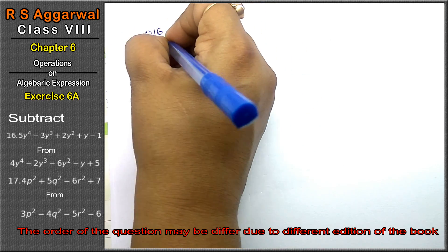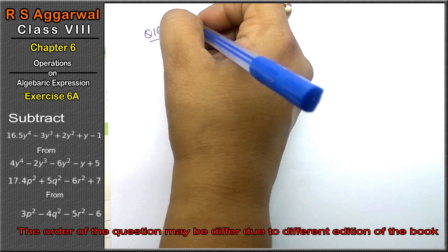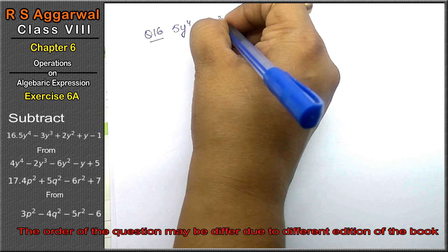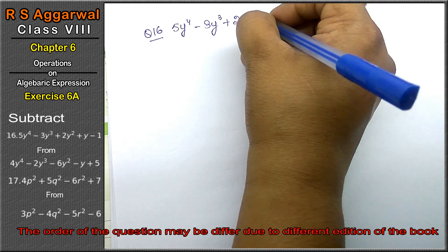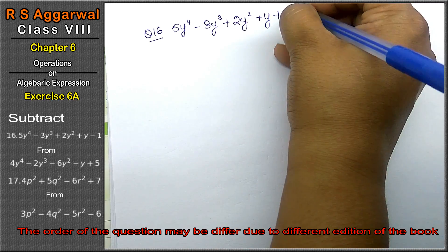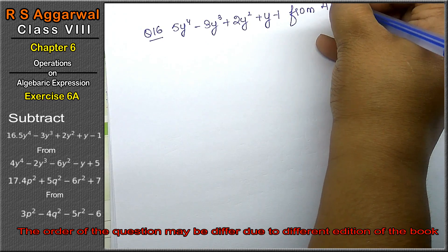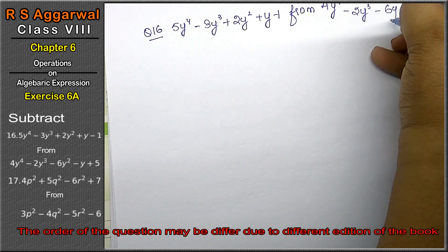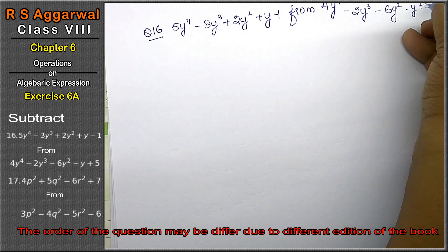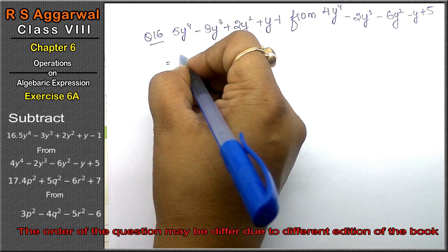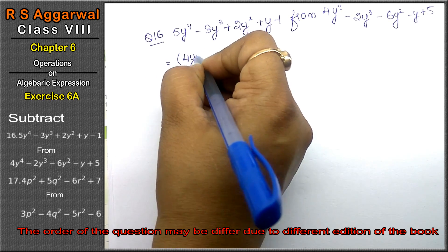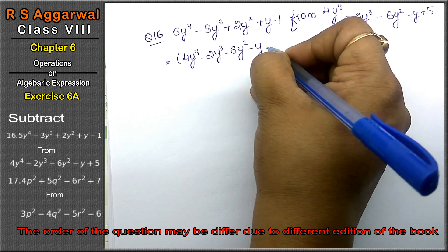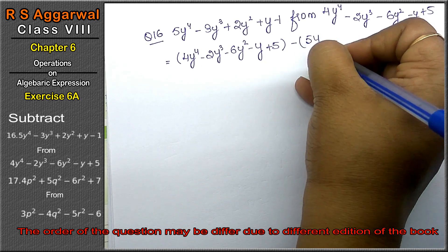Let's do question 16 of Exercise 6A. Question 16 is: subtract (5y⁴ - 3y³ + 2y² + y - 1) from (4y⁴ - 2y³ - 6y² - y + 5). We write the 'from' term first: 4y⁴ - 2y³ - 6y² - y + 5, then subtract (5y⁴ - 3y³ + 2y² + y - 1).